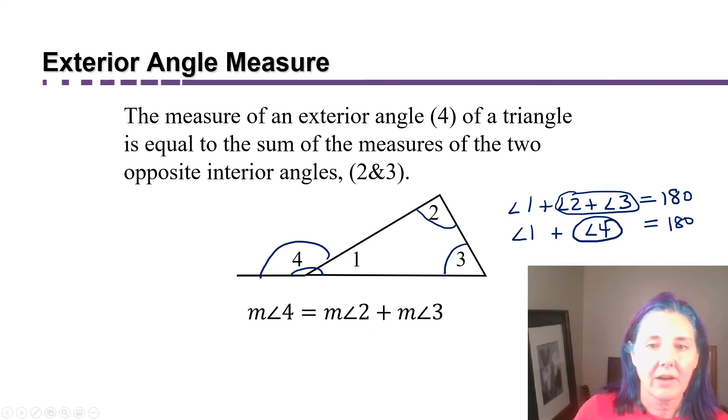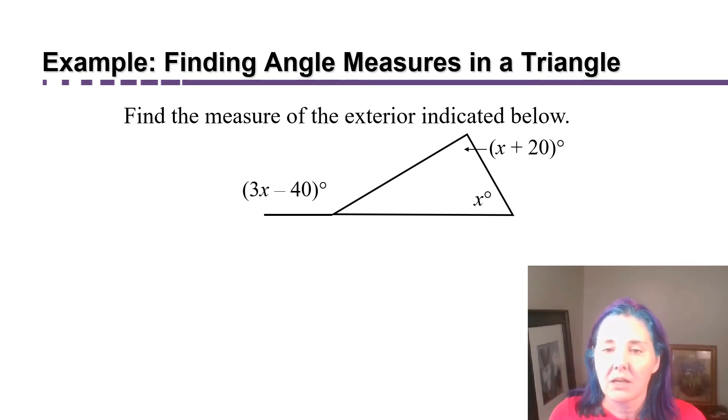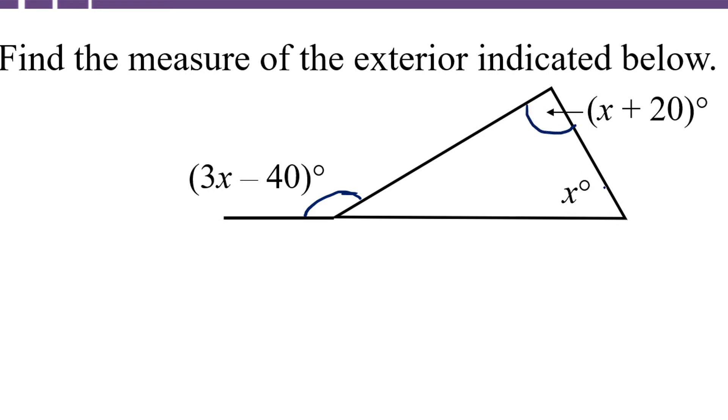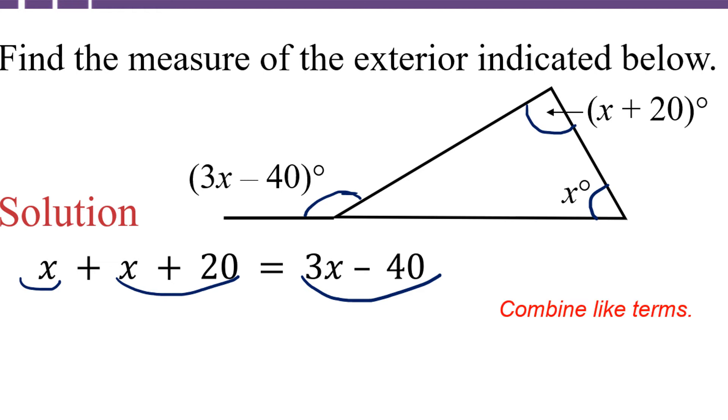Let's look at a problem where we could use that fact. Here, we're given a diagram with three marked angles. It says, find the measure of the exterior angle indicated below. Here's the exterior angle that we're looking for. It's marked 3x minus 40. They tell us that these two opposite interior angles are x plus 20 degrees and x degrees. They don't tell you that 3x minus 40 is the sum of those two other angles. You just have to know that because of this fact about exterior angles. You can say that the sum of the two opposite interior angles has to add up to the measure of the exterior angle.